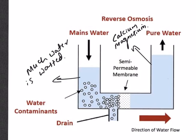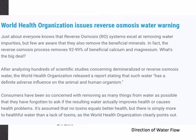Wastage of water is the second major issue. After analyzing hundreds of scientific studies concerning demineralized or reverse osmosis water, the World Health Organization released a report stating that such water has a definite adverse influence on animal as well as human organisms. These are the main reasons why both the NGT and WHO are against the use of RO water.